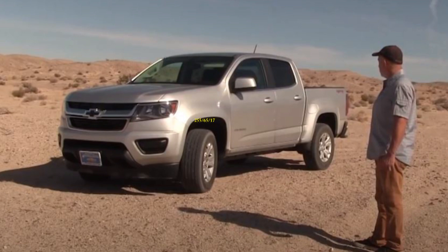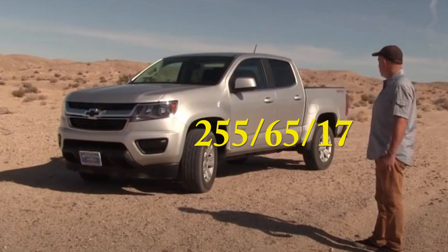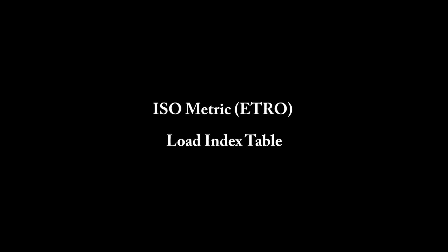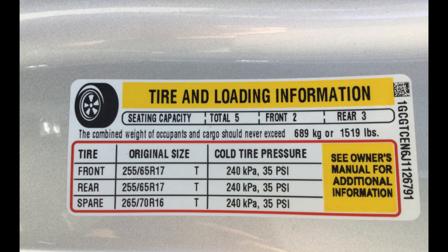This tire has a load index of 110, so we use the European chart. The chart is fairly easy — you've got the load index on the left, go across and line it up with 35 PSI at the top. You can see it's 2,260 pounds capacity.